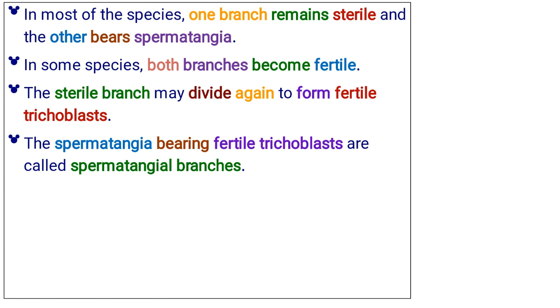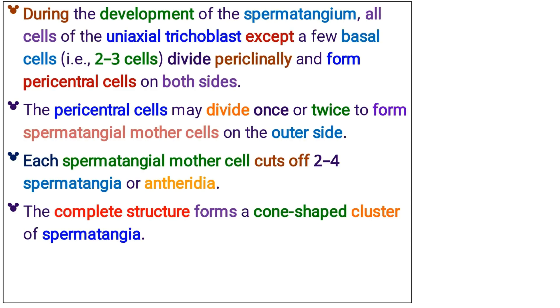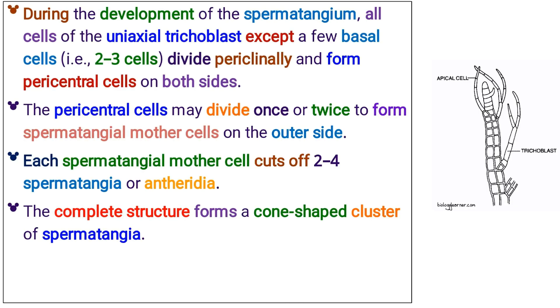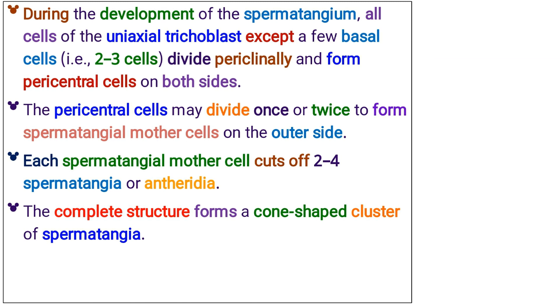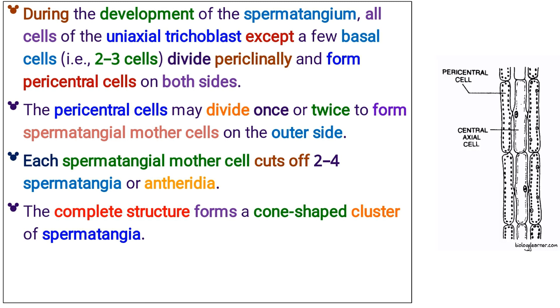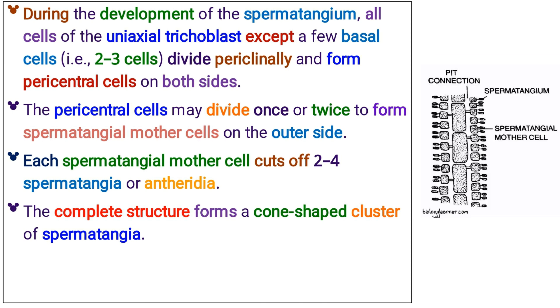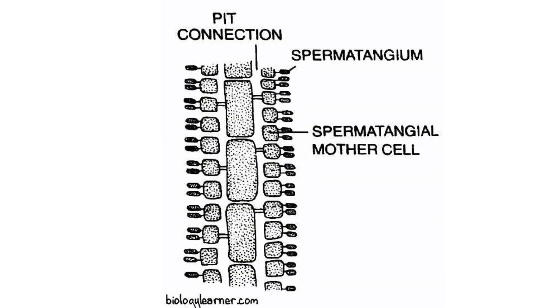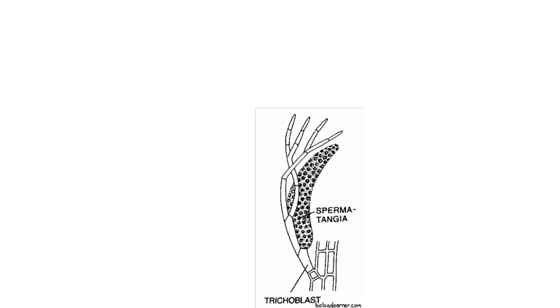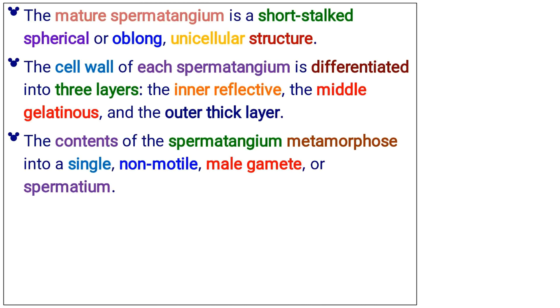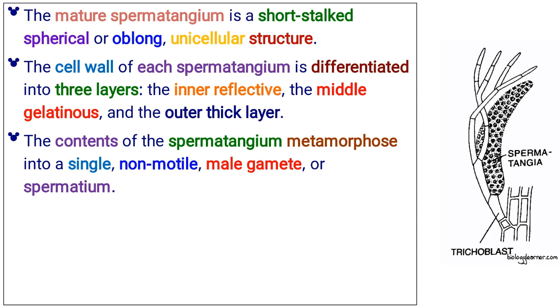The spermatangia-bearing fertile trichoblasts are called spermatangial branches. During the development of the spermatangium, all cells of the uniaxial trichoblast except a few basal cells, that is two to three cells, divide periclinally and form pericentral cells on both sides. The pericentral cells may divide once or twice to form spermatangial mother cells on the outer side. Each spermatangial mother cell cuts off two to four spermatangia, or antheridia. The complete structure forms a cone-shaped cluster of spermatangia. The mature spermatangium is a short-stalked, spherical or oblong, unicellular structure.